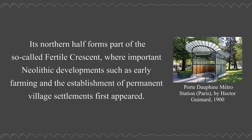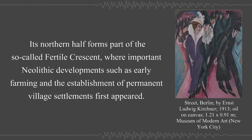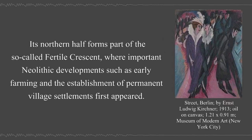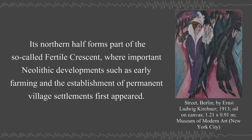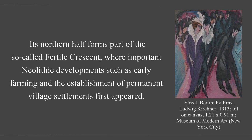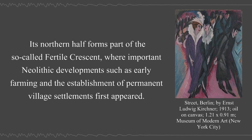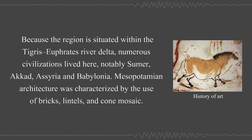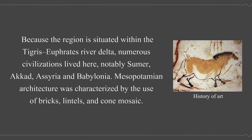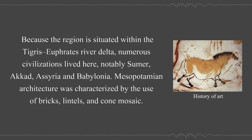Its northern half forms part of the so-called Fertile Crescent, where important Neolithic developments such as early farming and the establishment of permanent village settlements first appeared. Because the region is situated within the Tigris-Euphrates River delta, numerous civilizations lived here, notably Sumer, Akkad, Assyria, and Babylonia.